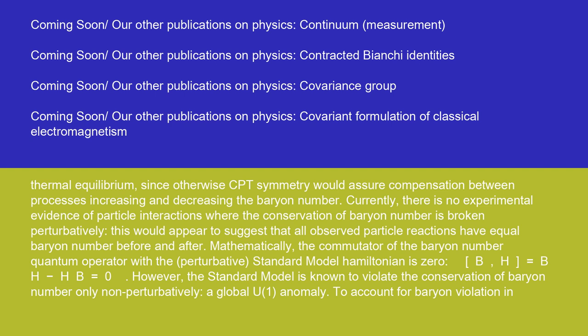Currently, there is no experimental evidence of particle interactions where the conservation of baryon number is broken perturbatively. This would appear to suggest that all observed particle reactions have equal baryon number before and after. Mathematically, the commutator of the baryon number quantum operator with the perturbative standard model Hamiltonian is zero: [B, H] = BH − HB = 0. However, the standard model is known to violate the conservation of baryon number only non-perturbatively — a global U(1) anomaly.